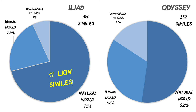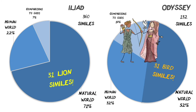Whereas in the Odyssey, there are 31 bird similes, which makes sense in a poem about a lot of traveling. But there's more about the human world — 32% in fact, compared to 22% in the Iliad — which again suggests this much more personal experience. Just so you know, the comparisons to gods are mostly about Aphrodite and Artemis when talking about women — they're either sexy or very virginal.